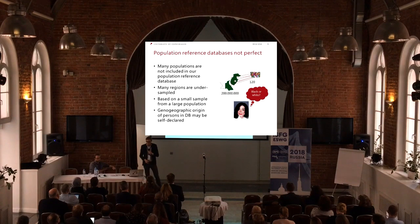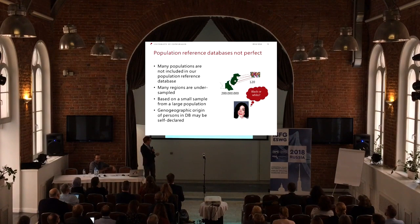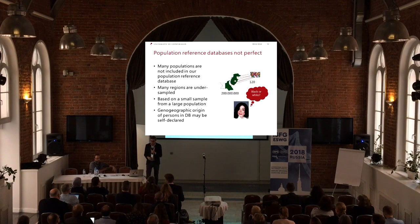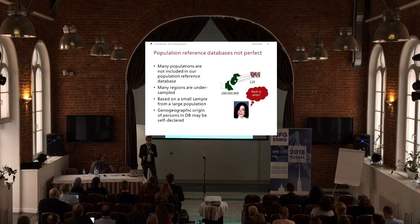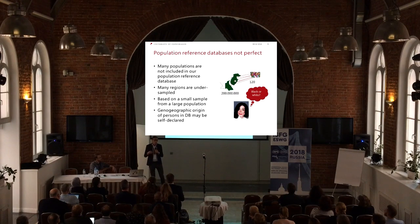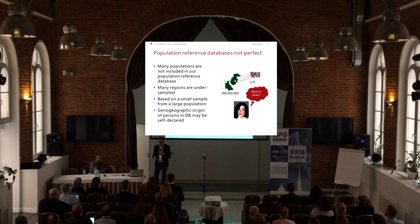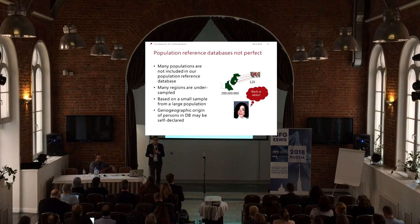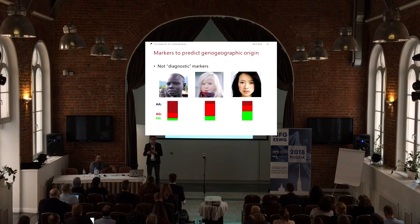Many populations are underrepresented — we have a Pakistani sample of 120 individuals from a population of 200 million people. So of course we risk having a sampling error. Also, the geographic origin of the person is often self-declared. If I am asked where I come from, for at least the last two or three generations that I know of, I am more than European — but I don't know if there's a native man or somebody else passing by who has left a certain sign in my evolutionary history. So I would call myself European, but I may actually have a mix of genes. We need to be aware of that, and there are some things you should be aware of in these databases.